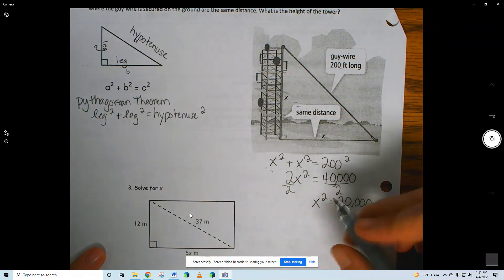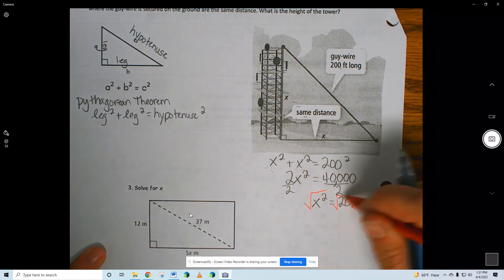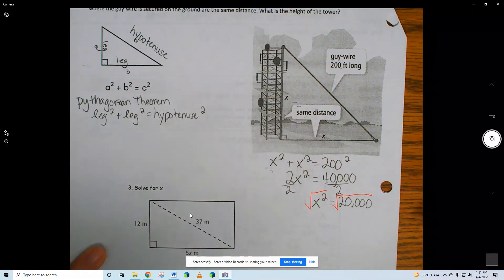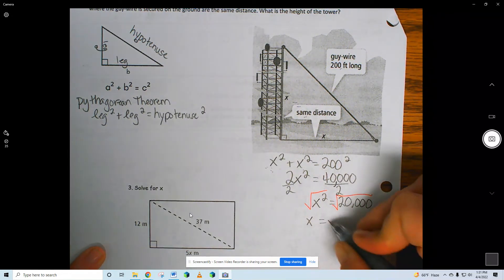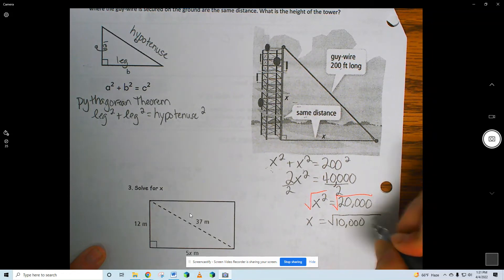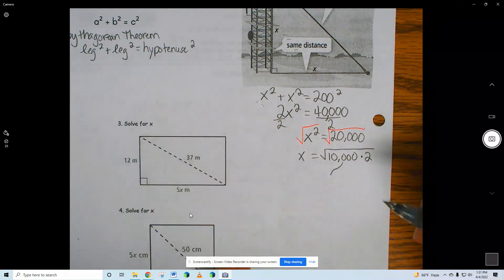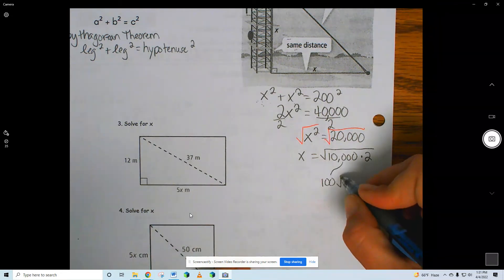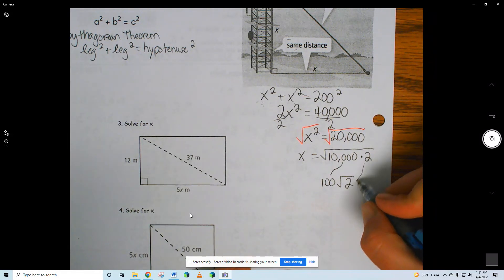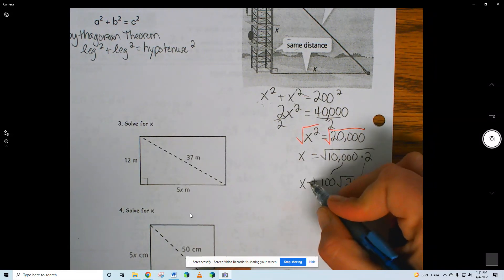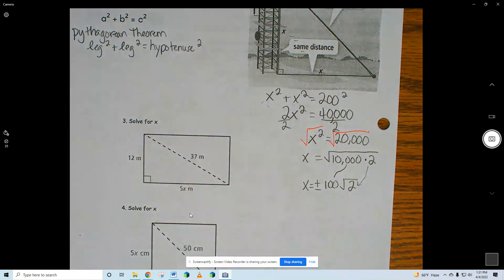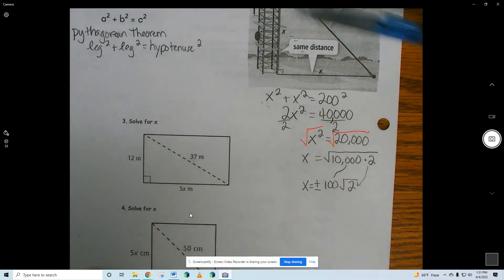We had a problem like this before, last night's homework. I need to break this up. 10,000 is a perfect square. So it's going to be 10,000 times 2, because 10,000 square rooted is 100. Radical, and I leave the two underneath, plus or minus, of course. And honestly, this might mean nothing to you, so I'm actually going to work it out.